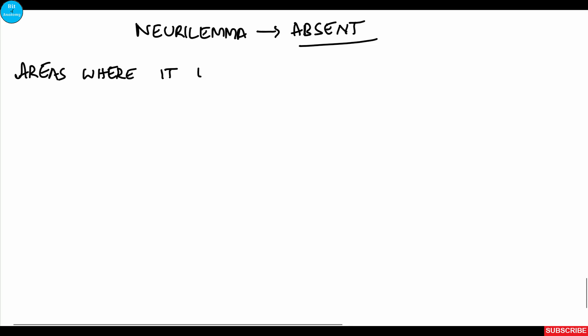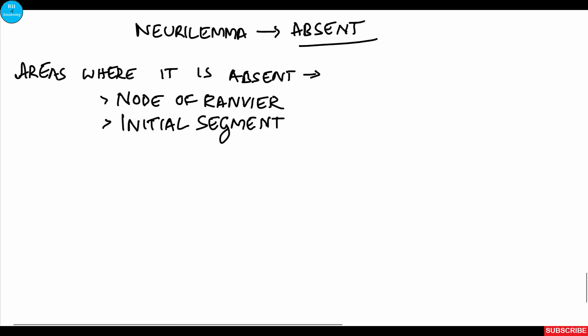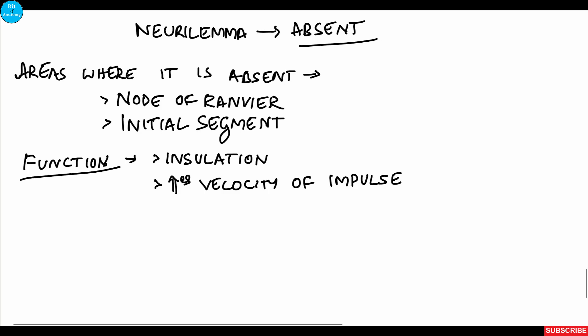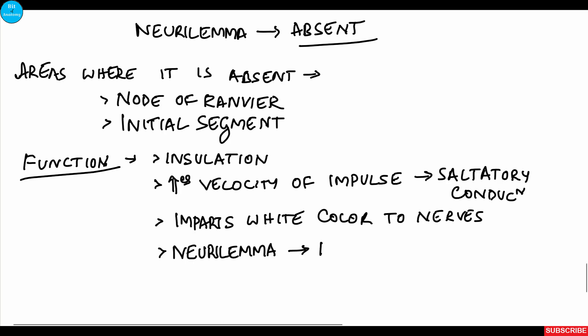The myelin sheath is absent at certain areas: the node of Ranvier, which helps in saltatory conduction, and the initial segment where the axon begins from the cell body. The functions of the myelin sheath include covering the entire axon, acting as an insulator, and increasing the velocity of the nerve impulse through saltatory conduction — meaning the nerve impulse travels faster in myelinated axons than in unmyelinated axons. It also imparts a white color to the nerve. The neurilemma present in the PNS helps in the repair of smaller injuries to damaged nerve fibers.